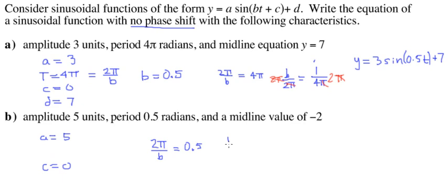Do the reciprocal on both sides and you get b divided by 2π equals 1 over 0.5 which is 2. Multiply both sides by 2π and you get b is 4π. C is 0 because there's no phase shift and for d they say our midline value is minus 2.